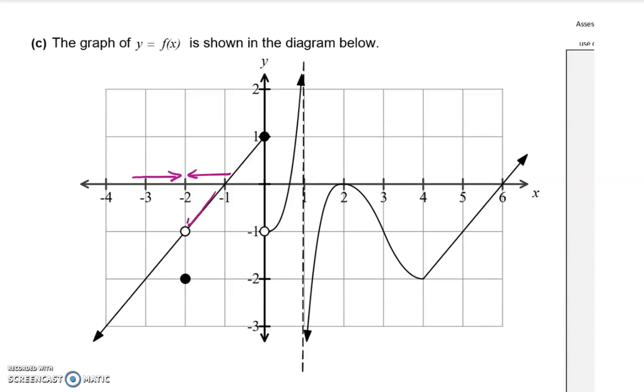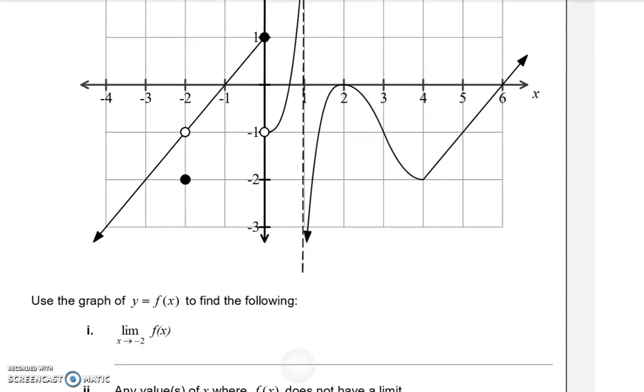If we were coming from the left towards minus 2 and the right towards minus 2, what would be happening on our graph? So our line would be heading towards this same point. Now, you can forget about the fact that there's a hole there. That's not important when we're looking at limits. We're looking for where the graph is heading towards. And from both the left and the right, this is heading towards the minus 1 point. So the limit, as we go towards X equals minus 2, is minus 1.